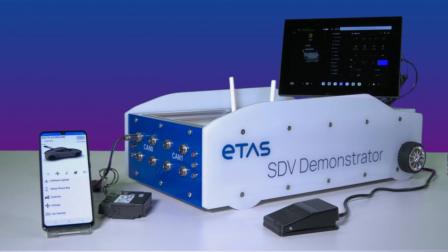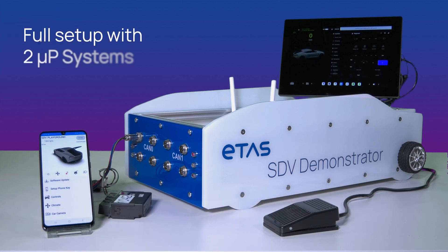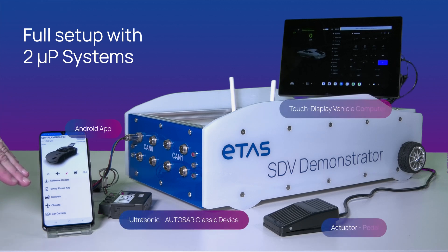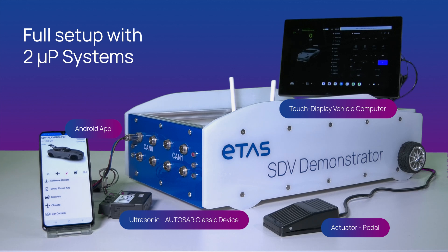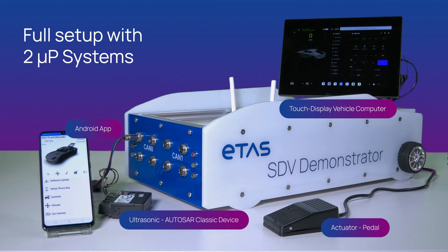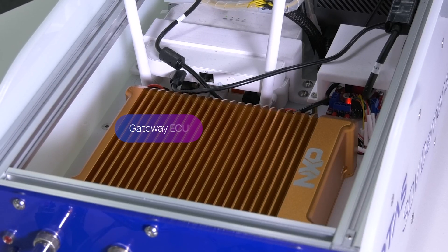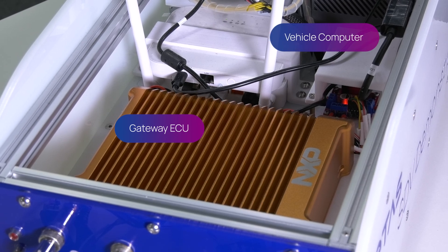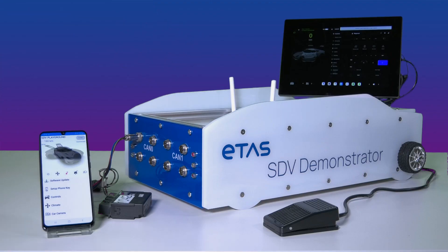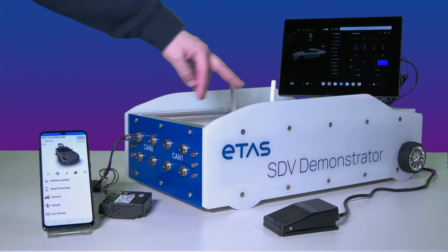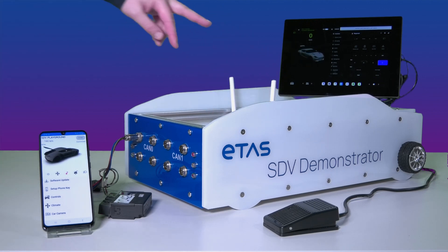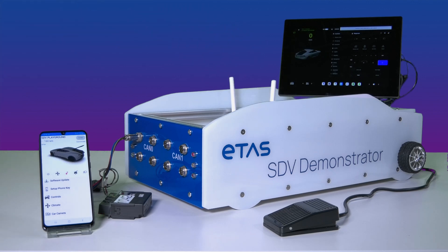Sure, Gavin. We see here a complete end-to-end demonstrator, which is connected to the cloud, also visible on this mobile phone. We have two microprocessor systems: one from NVIDIA acting as a vehicle computer, also powering the display and connected to the cloud. And we have a gold box from NXP, which is acting as a gateway ECU. On that gateway ECU, we have classic AUTOSAR devices connected, which run with signal-to-service communication. Those two microprocessor systems communicate via the AUTOSAR Adaptive standard and a publish-subscribe mechanism over SOME/IP.